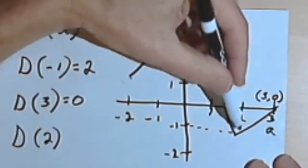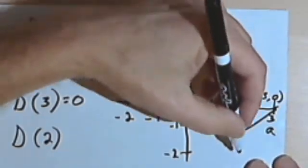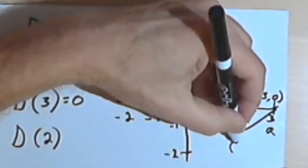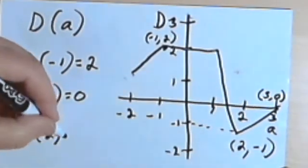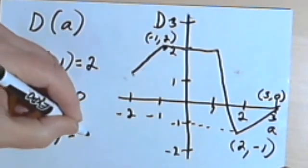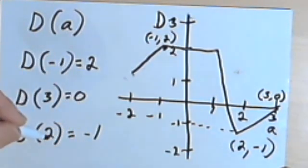And it looks like I'm gonna call that negative 1. So that's going to be the ordered pair 2 comma negative 1. My input is 2, and my output is negative 1. So d of 2 equals negative 1.